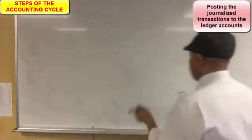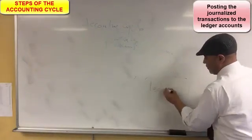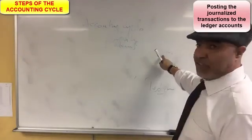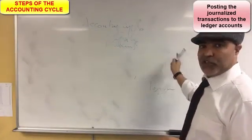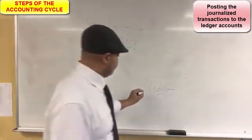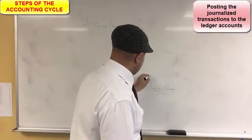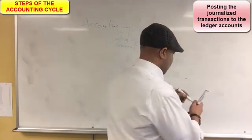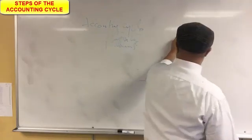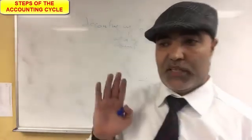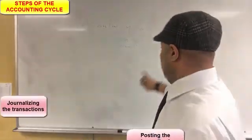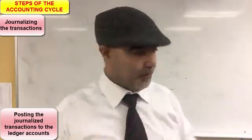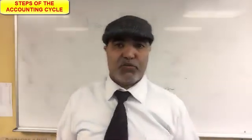They are transferred to what we call the ledger. The act of transferring financial transactions from the journal to the ledger is called posting. So for the journal we say journalizing, and transferring from journal to ledger we call posting.